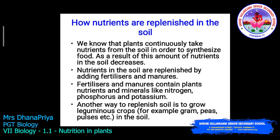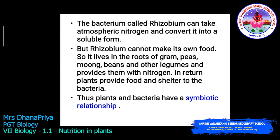Another way to replenish the soil is to grow leguminous crops, for example peas and pulses. The bacterium called Rhizobium can take atmospheric nitrogen and convert it into a soluble form. However, Rhizobium cannot make its own food, so it lives in the roots of gram, peas, moong beans, and other leguminous plants, providing them with nitrogen. In return, the plants provide food and shelter to the bacteria.